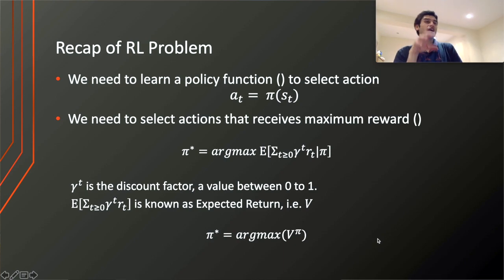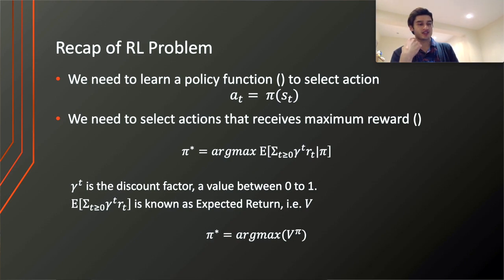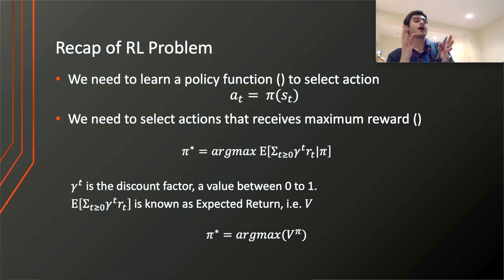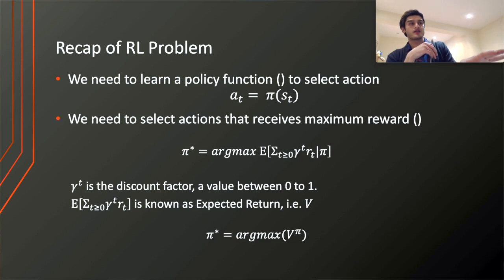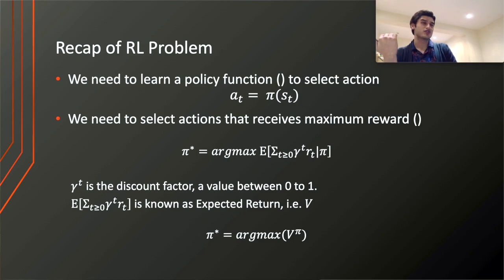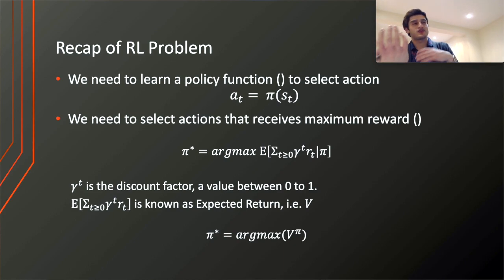Here, V — the value function — is basically known as the state value function, which gives us the expected return for starting at some particular state s and then always following some policy pi. This function requires that we follow some policy we already have. But the problem in our scenario is we don't actually have a policy, because our neural network hasn't learned anything yet. The initial functions the neural net will take will essentially be random. So we actually need a different value function that accommodates our needs.